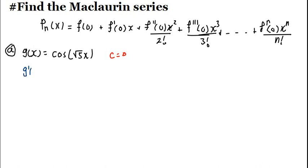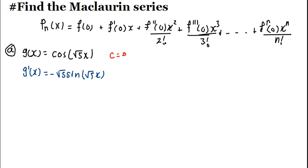So G prime of X is going to be equals to minus √5 · sin(√5·X). This reminds us of how you differentiate trig functions: you differentiate cos and you get minus sin, then you multiply by the derivative of the angle. The angle is √5·X, and when you differentiate it you get √5, so that's √5·X.